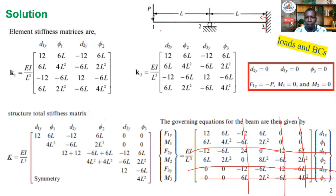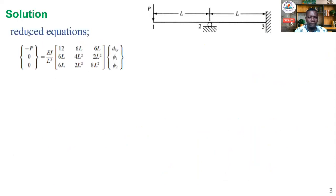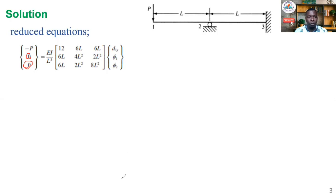After applying the boundary conditions and removing the corresponding rows and columns, you are left with a reduced equation of three unknowns. You can solve this by row reduction. Because of the zero-load condition on some equations, you can use the last equation to simplify and then solve the remaining simultaneous equations. The vertical displacement at node one, d1y, is negative 7PL³ over 12EI — negative because it is downward.